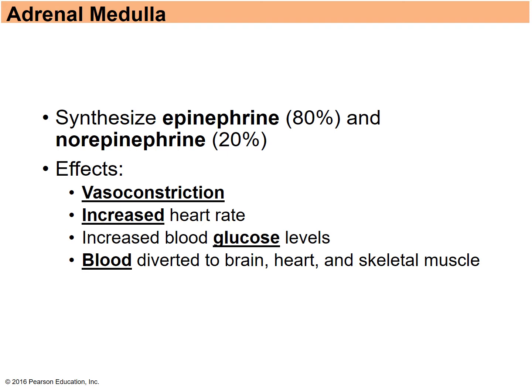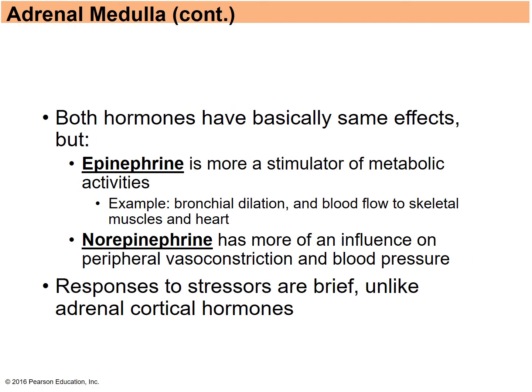The adrenal medulla produces both epinephrine and norepinephrine. Effects of both include vasoconstriction, increased heart rate, increased blood glucose levels, and blood being diverted to the brain, heart, and skeletal muscle — essentially the sympathetic division's fight-or-flight response. Epinephrine is more of a stimulator of metabolic activities, while norepinephrine influences peripheral vasoconstriction and blood pressure. Responses are very brief — you see the effect immediately, but it will not be long-lasting.